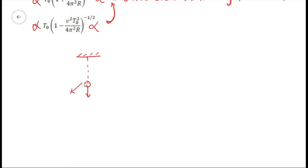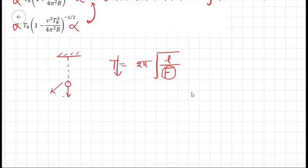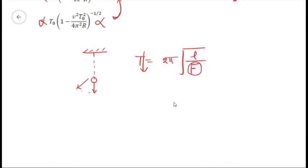If we look at the time period of this pendulum, it will be 2π√(L/F), where F is the effective gravitational force. But in this case, the effective gravitational force will increase, so if it increases, time period should decrease.